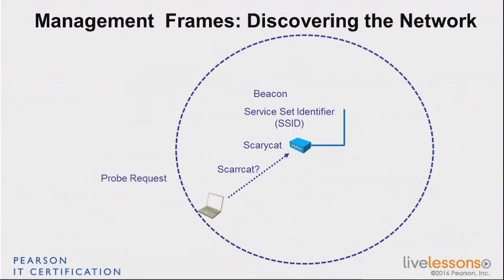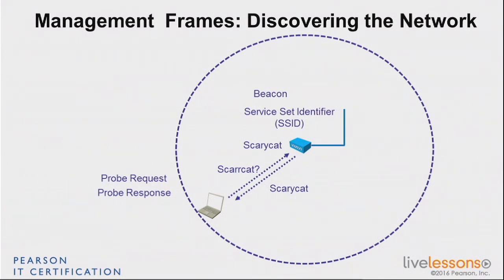When a probe request is sent, the access point is supposed to respond if it supports that SSID. If it doesn't, it doesn't respond. But if it does, it replies saying: yes, I do that SSID, and this is how my network is configured — that's a probe response. The probe response and the beacon are very close in structure because they say the same thing: this is what the network is, this is what it does. The only difference is that the beacon is unsolicited, sent every 100 milliseconds, whereas the probe response is a reply to a question.